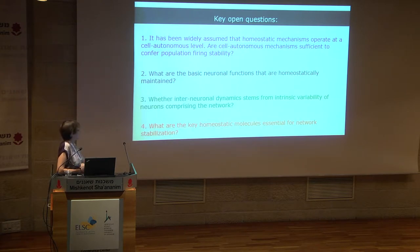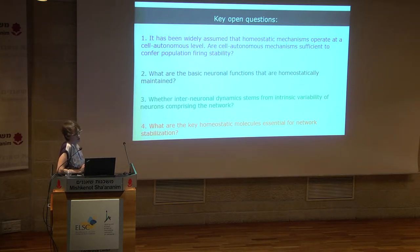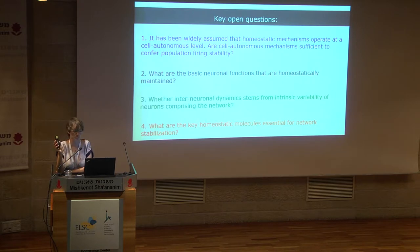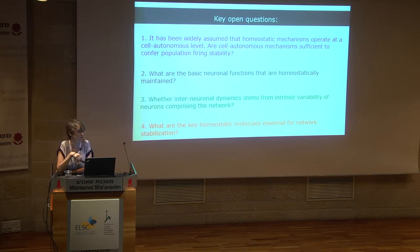Finally, we are trying to understand what the key homeostatic molecules essential for network stabilization are. If you look carefully at the literature, we know a lot of essential molecules for stabilization of the Drosophila neuromuscular junction, but we don't really know almost anything about key molecular regulators of homeostasis in the mammalian CNS.